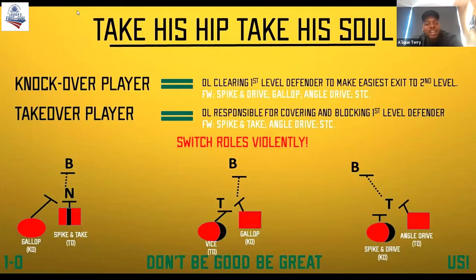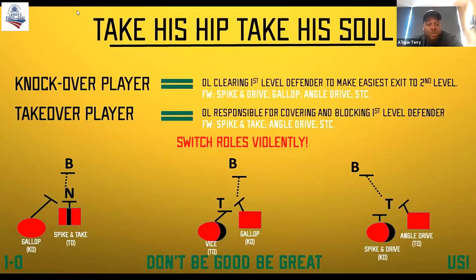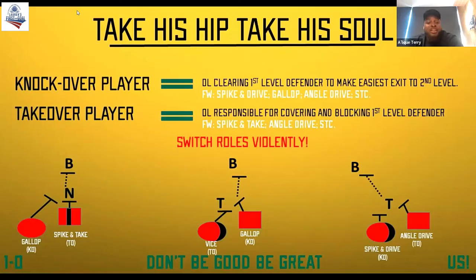That goes into the knockover player and the takeover player. For us, the knockover player is the offensive lineman clearing the first level defender to make the easiest exit to the second level — clearly blocking the guy. The footwork will be a spike and drive. Our footwork is going to exemplify exactly what we need them to do. Spike that play side foot and drive that backside knee north — you're going to be the knockover player. If you spike and drive, you're thinking: I'm going to knock this over to get the shoulders turned for my backside offensive lineman.